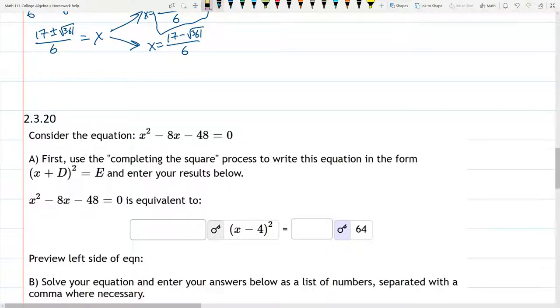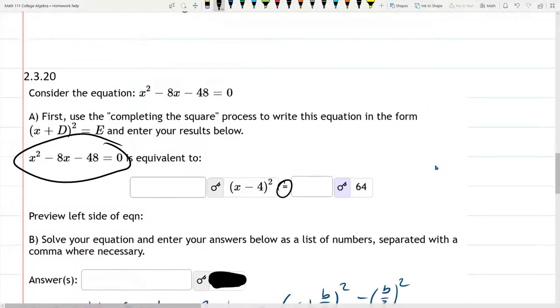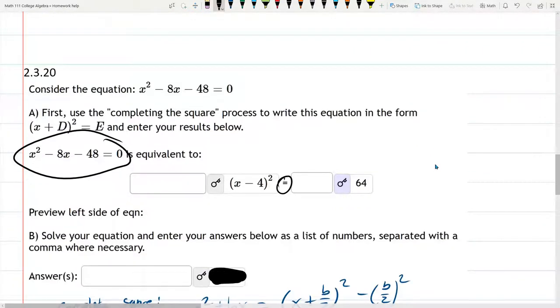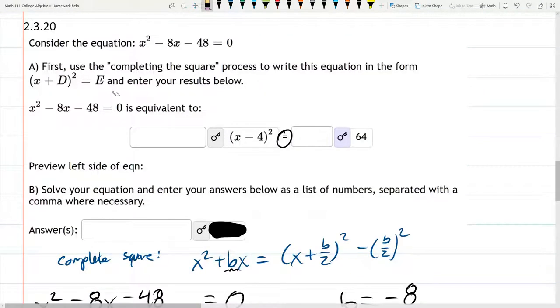I thought they were asking for just D and E. So they're asking for the entire equation is equivalent to... And I didn't see that little equal sign there. All right, once we have it in that form, then you should be able to see what parts you're looking for. So that's part A.